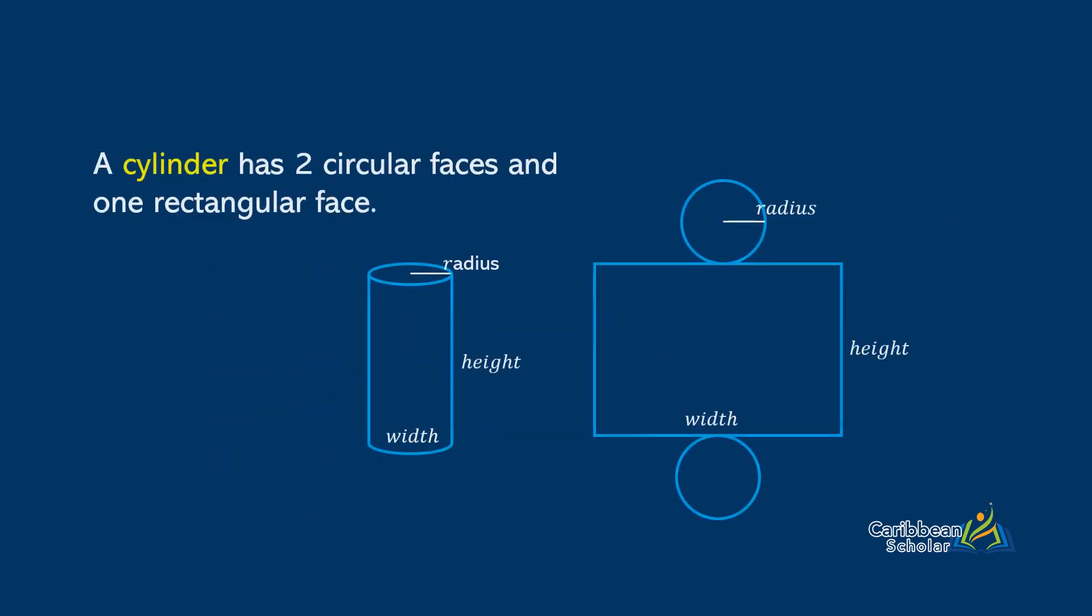Now a cylinder has two circular faces and one rectangular face. So to find the area of a cylinder, we need to find the area of those circular faces and the rectangular face and then just add everything up.